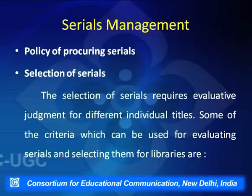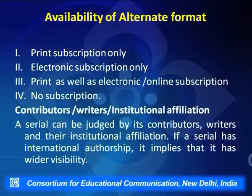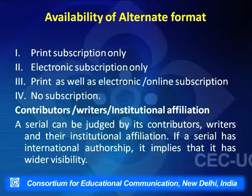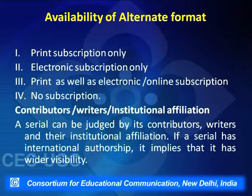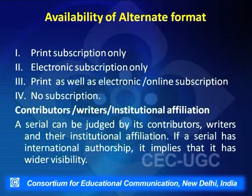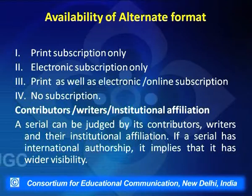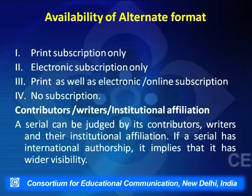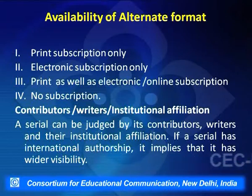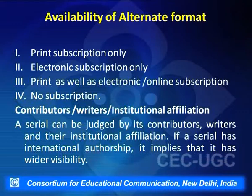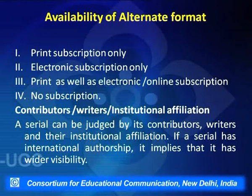There are different criteria for selecting serials. A library may decide to have a print subscription only, or it may prefer electronic journals given that users' information-seeking behavior is changing. The library may accordingly decide to develop an online collection and subscribe to e-resources and e-journals. There may also be situations where a library decides to have both print and online journals. The library will decide accordingly based on user preferences and institutional policy.